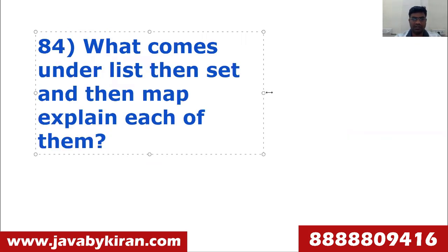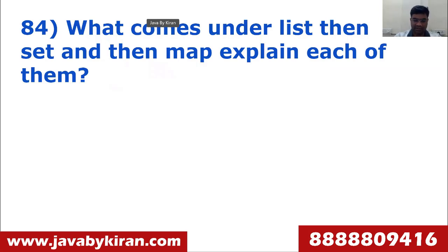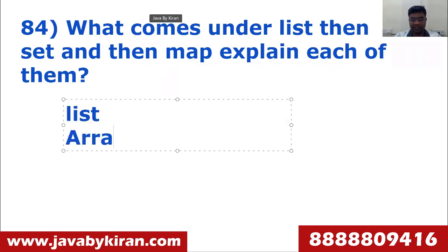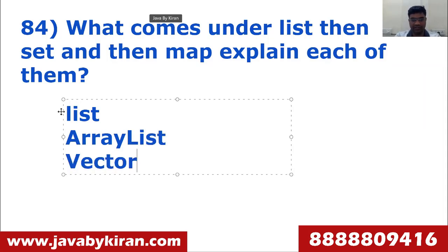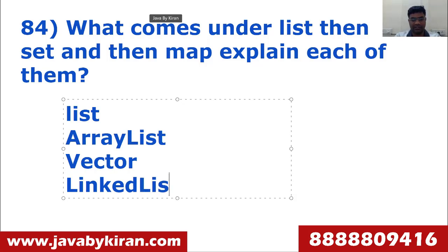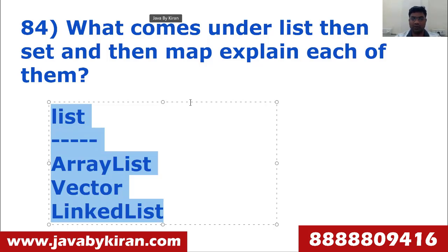What comes under List, Set, and Map? Explain each. This is a big question so take your time. All three are interfaces. Under List we have ArrayList, Vector, and LinkedList. You keep explaining everything — ArrayList allows duplicates, Vector is a legacy class, and LinkedList is a node-based structure.